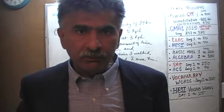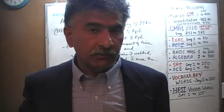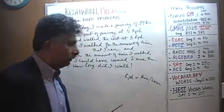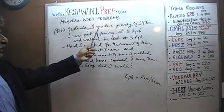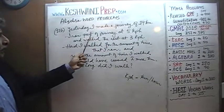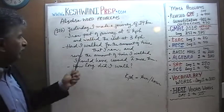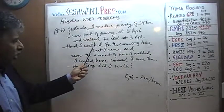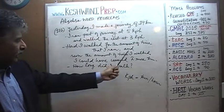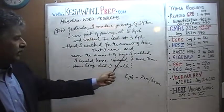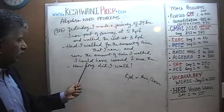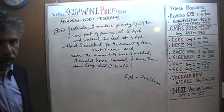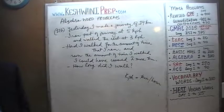I'm going to read it one more time and give you 5 seconds to pause and unpause the video. Yesterday I made a journey of 19 kilometers. I ran part of the journey at 5 kilometers per hour and walked the rest at 3 kilometers per hour. Had I walked for the amount of time that I ran and run the amount of time I walked, I could have covered 2 more kilometers. How long did I actually walk? Do it yourself - pause the video.